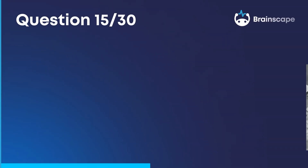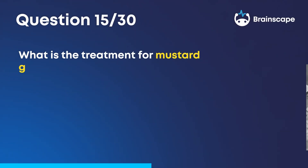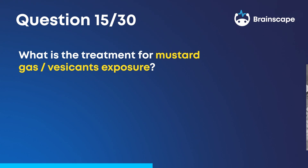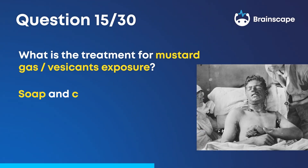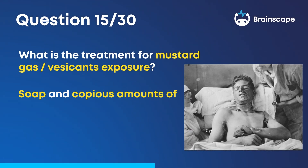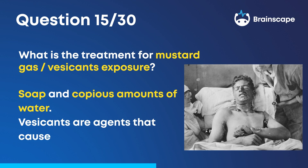Question 15. What is the treatment for mustard gas (vesicants) exposure? Soap and copious amounts of water. Vesicants are agents that cause blistering.